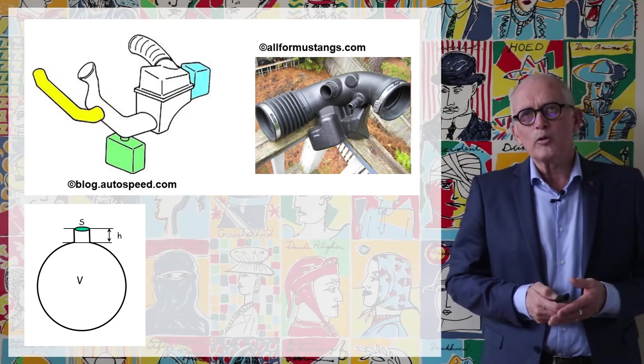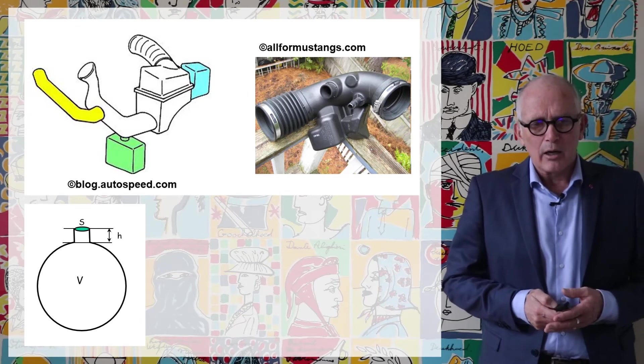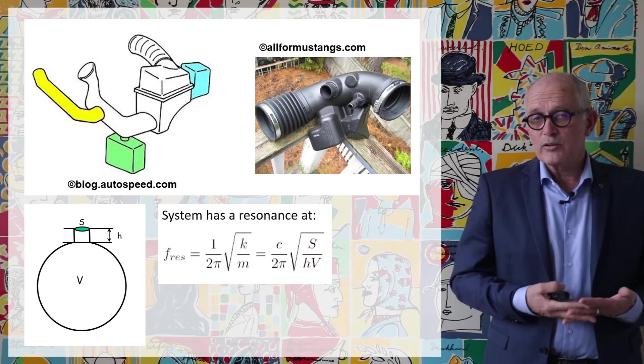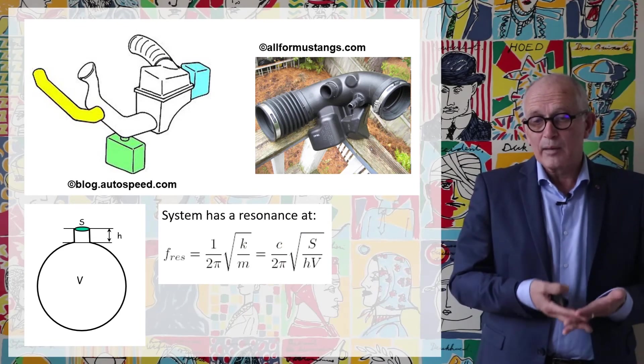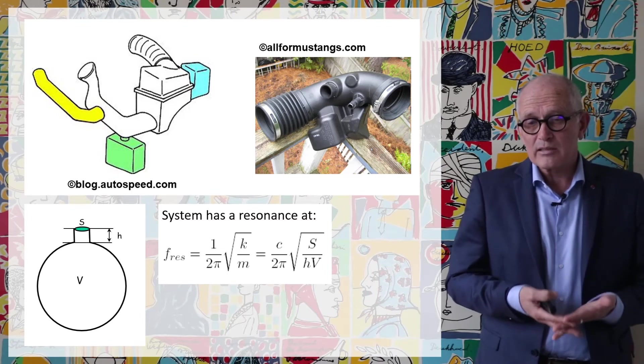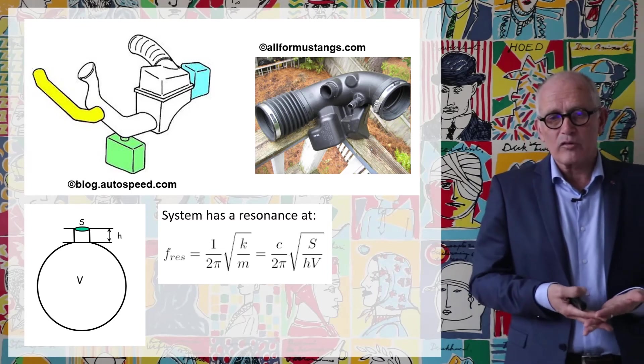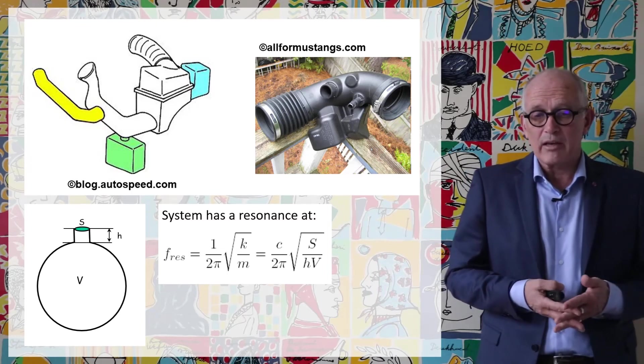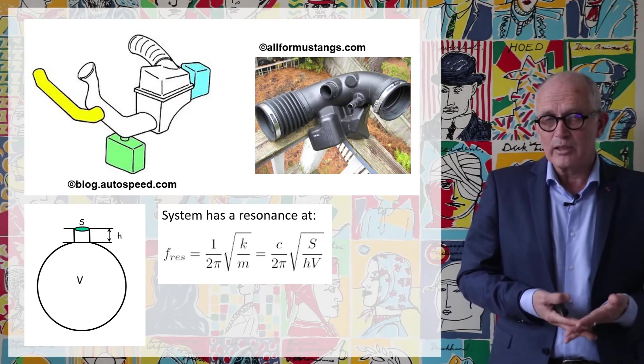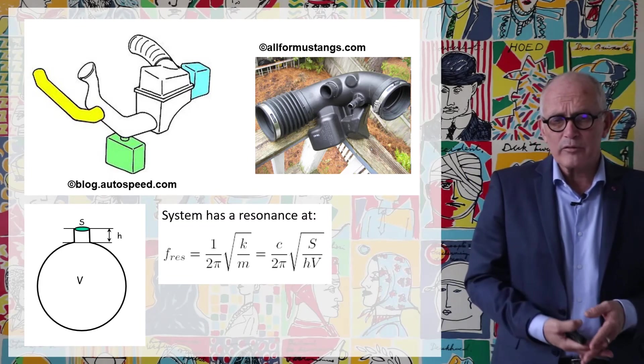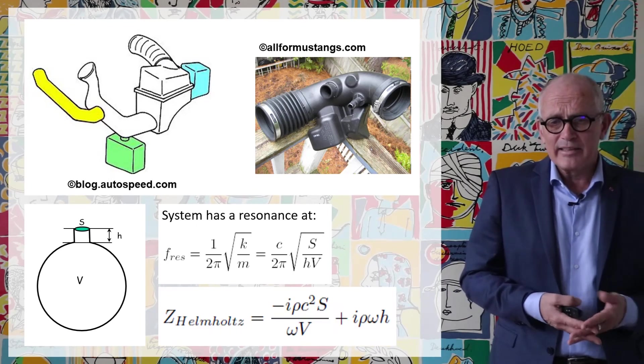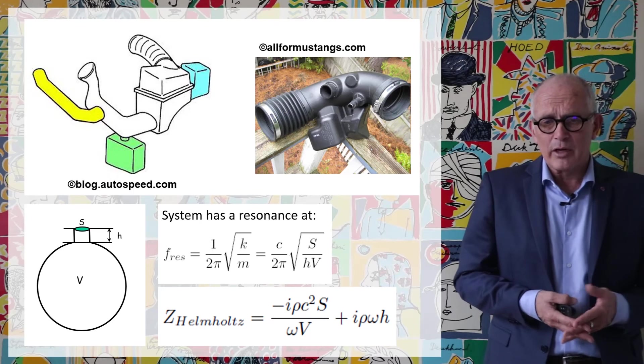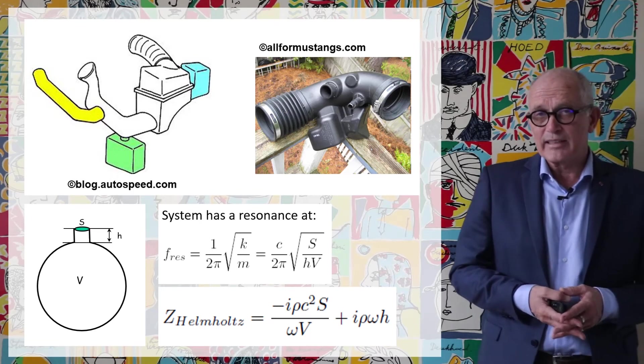So in the video I'm not going to detail how we can reach these conclusions but this system has a resonance frequency which is given by C over 2 pi times the square root of S over HV. S is the cross section of the neck, V the volume of the cavity, H the height of the neck and C the speed of sound. And in terms of impedance one can demonstrate that the impedance of a Helmholtz resonator is given by the expression that I give.